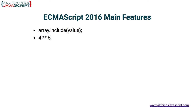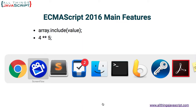Second, the exponentiation operator. This operator is two asterisks, and basically what you're seeing on the screen means return four to the power of five. So let me jump to Sublime and we'll look at a few examples.